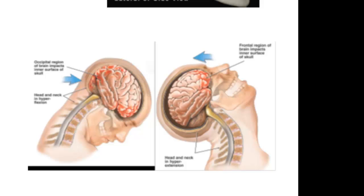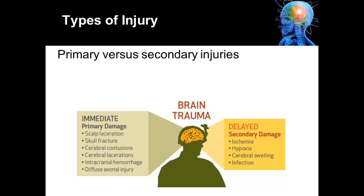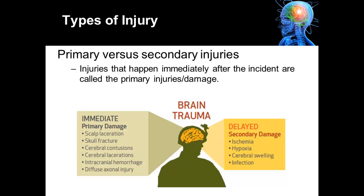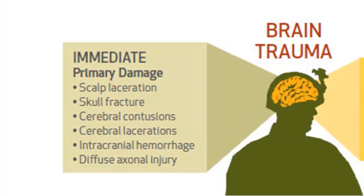Another way to classify a type of head injury is whether or not the injury is primary versus secondary. The primary injury refers to injuries that happen immediately after the incident. For example, if someone strikes their head against a wall, the primary injury is that part of the brain that strikes the wall. It could involve a scalp laceration, a skull fracture, cerebral contusion (bruising of the brain), cerebral lacerations (cuts in the brain), as well as an increase in intracranial hemorrhaging and injury to the neurons, referred to as diffuse axonal injury.